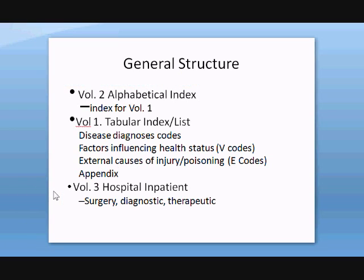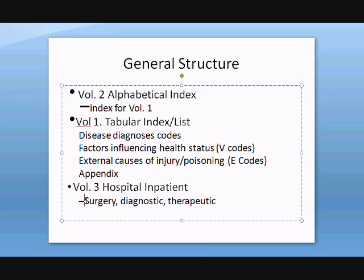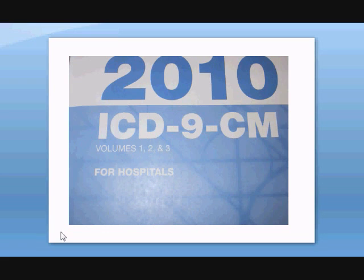Volume 2 is the alphabetical index. Volume 1 is the tabular list containing all diseases from code 001 to 999. It also contains what are known as the factors that influence health status — the V-codes — and the external codes of injuries, or E-codes. Whenever you have anybody who is injured, poisoned, fractured, and so on, you add the E-code to explain how the individual was injured externally. Volume 3 contains primarily surgeries — about 90 percent surgery codes — plus diagnostic and therapeutic codes, and is used for inpatient coding only.